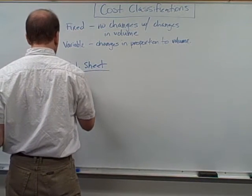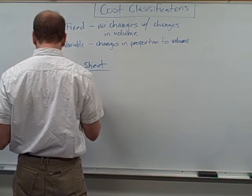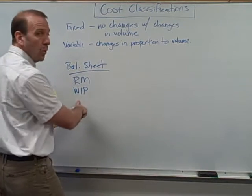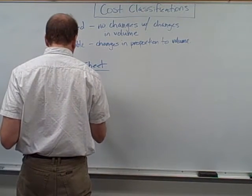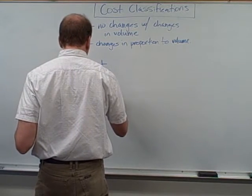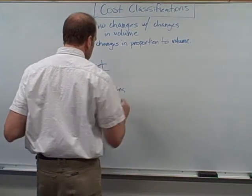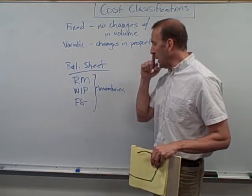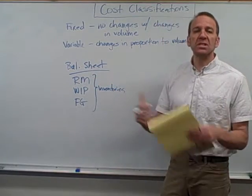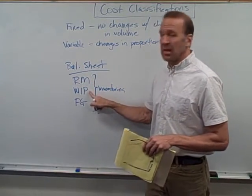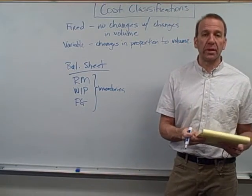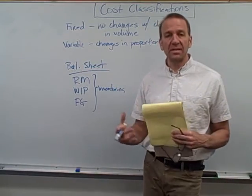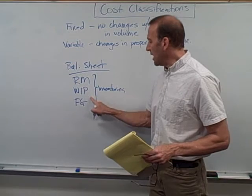On our balance sheet we're going to have raw materials inventory (RM), work in process or work in progress (WIP), and finished goods. These are all inventory categories — assets that we own. Raw materials inventory is before we start manufacturing — we've just purchased the materials. Once we start manufacturing, they become work in process. Once the table is all done, those costs move into finished goods.